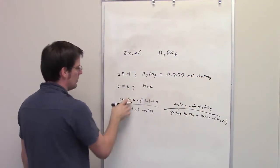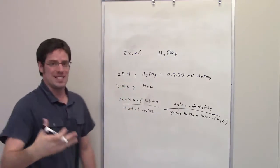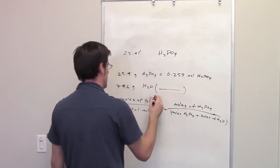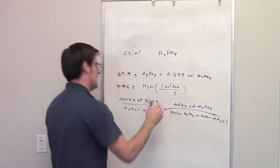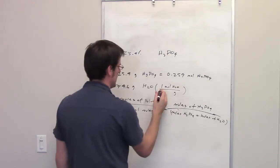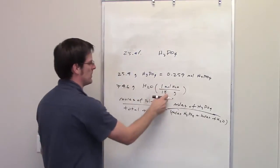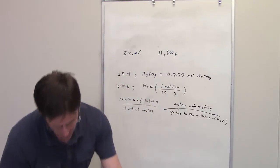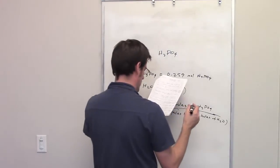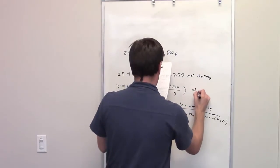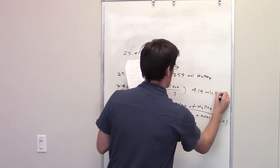How many moles of water are 74.6 grams of water? Well, I just use the molecular weight here. One mole of water is equal to, each hydrogen weighs one, oxygen weighs 16, that's 18 grams. 74.6 divided by 18 comes out to be 4.14 moles of water.